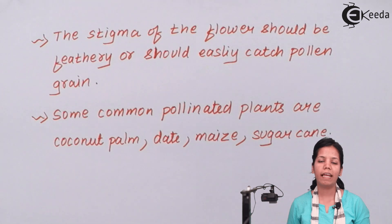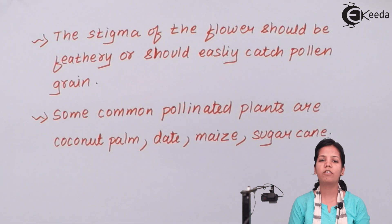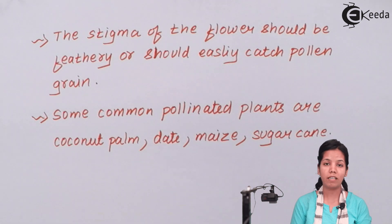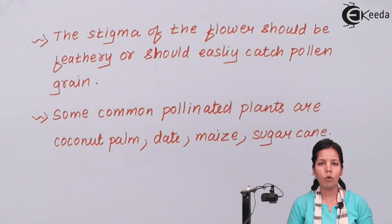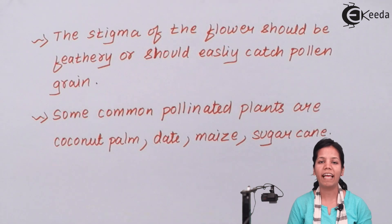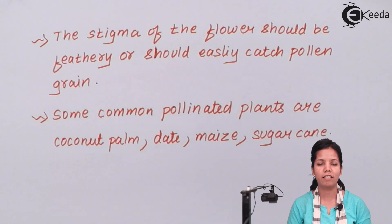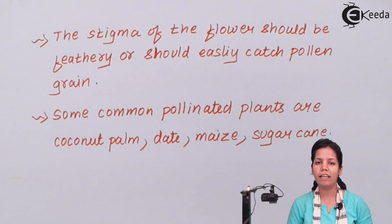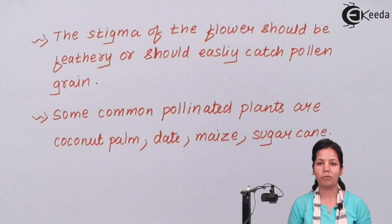Students, in this part of the chapter we have studied about how anemophily, or wind, can help in pollination of plants. I hope you all are clear with this concept. Thank you.